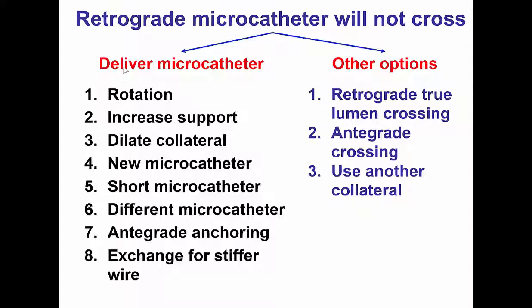If all of this fails and the microcatheter cannot be delivered, another option is to try to cross from retrograde to antegrade using the wire that crossed the collateral. The other option is to use the retrograde wire as a marker for antegrade crossing. And the third is to use another collateral that may be more favorable for delivering the microcatheter.